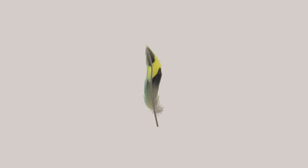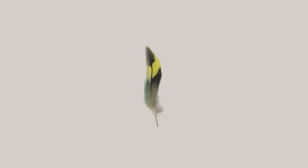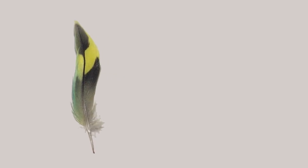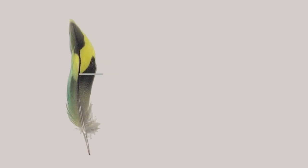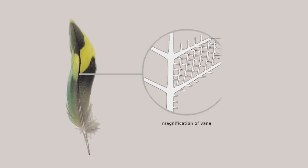The portion above the skin is termed the rachis, from which smaller branches on each side extend — these filaments are called barbs. The portion of the feather that has barbs is called the vane. In larger feathers, these barbs have two sets of microscopic filaments called barbules.